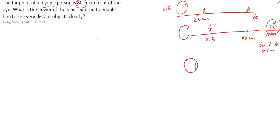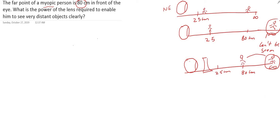The near point is 25 centimeters and the far point of the myopic eye is 80 centimeters. Suppose an object is at infinity — if you use a concave lens, then the image of this object will be virtual, diminished, and erect. If the object is at infinity, the image should be virtual, erect, and diminished, and this image becomes the object for the myopic eye.